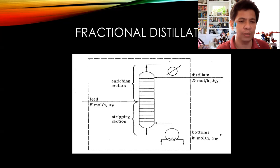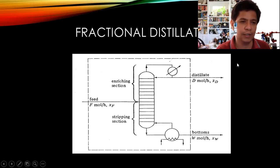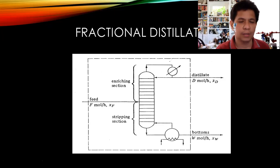You will have several of these trays, and basically in our calculation we will try to determine the number of trays to put in the tower. Just like in differential distillation, we still have the same variables: the feed, the distillate product, and the bottoms product. In this particular distillation setup we also have a condenser.